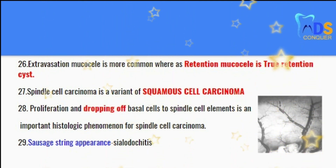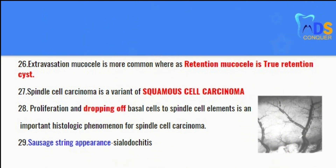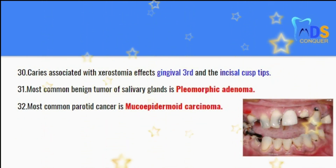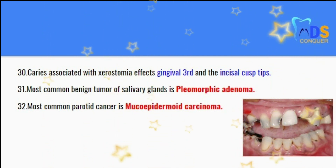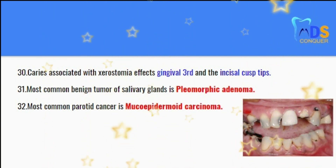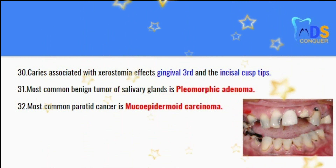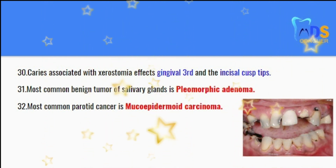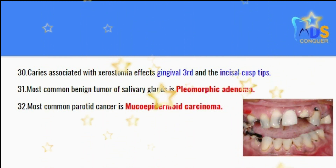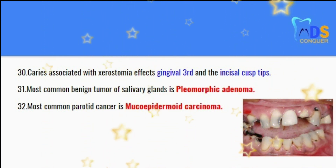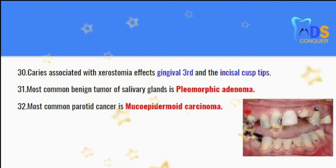Point 29: sausage string appearance is associated with sialodochitis. Point 30: caries associated with xerostomia affects the gingival third and the incisal or cusp tips. Point 31: the most common benign tumor of salivary glands is pleomorphic adenoma. The most common parotid cancer is mucoepidermoid carcinoma.